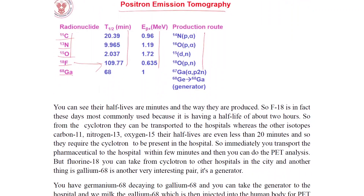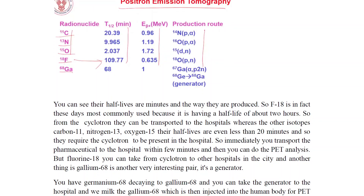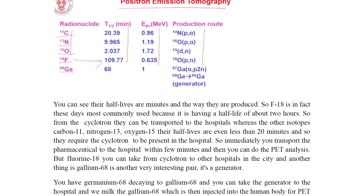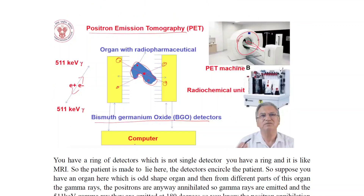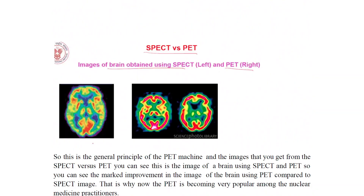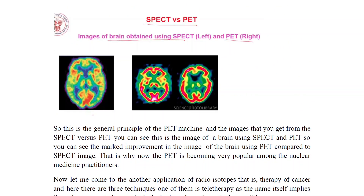Positron Emission Tomography (PET) uses radionuclides 11C, 13N, 15O, 18F, and 68Ga. PET involves a PET unit and radiochemical unit; bismuth germanium oxide detectors are used. PET provides images processed by computer. Comparing SPECT and PET, both provide brain images but PET offers higher resolution. Images of the brain can be obtained using both techniques.